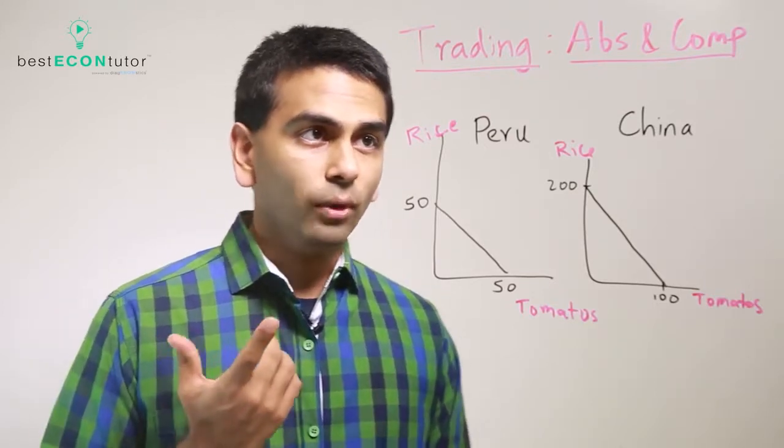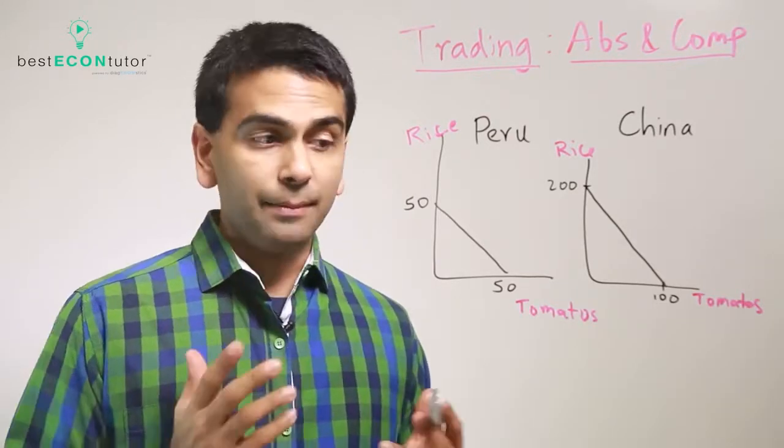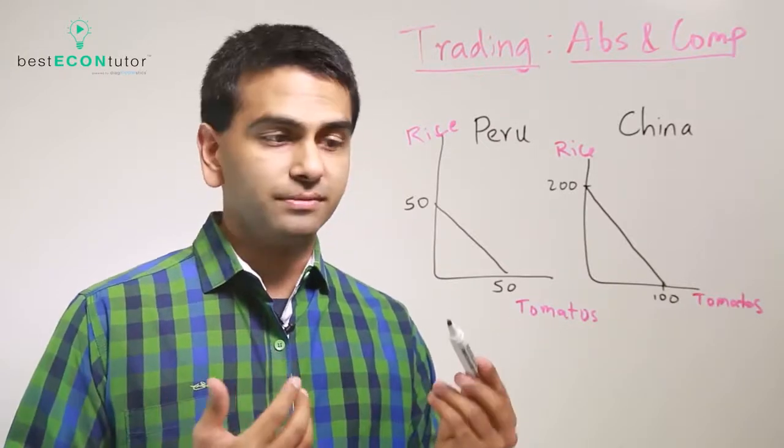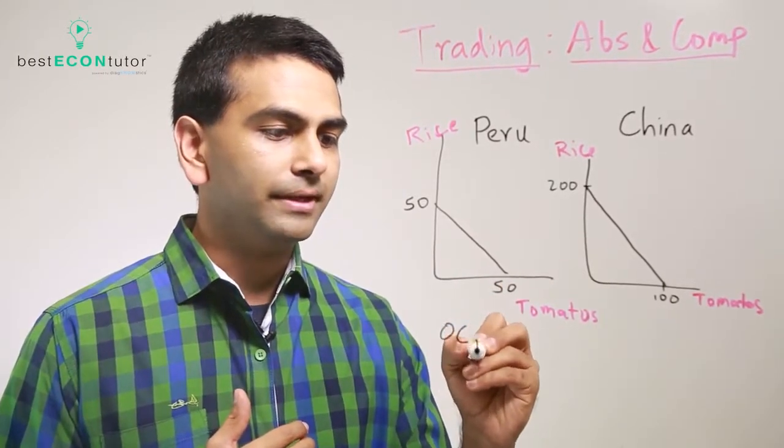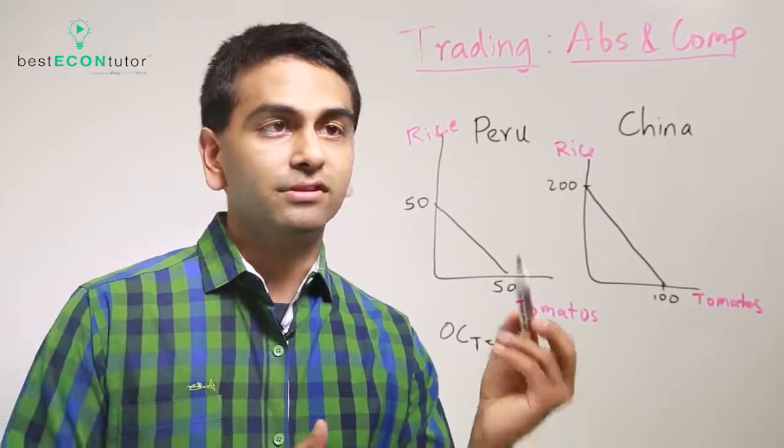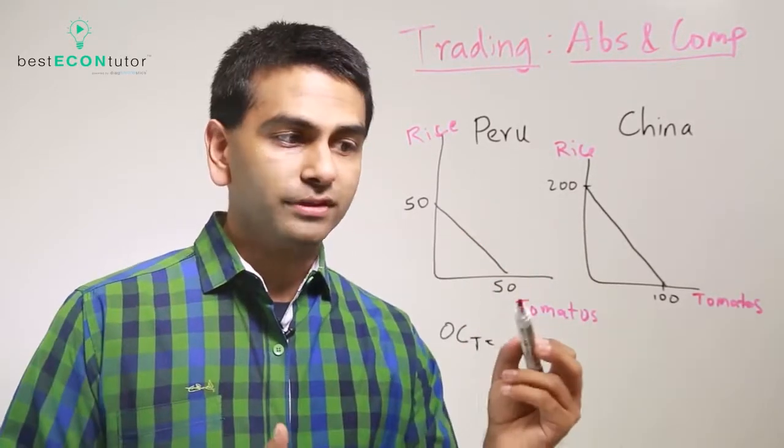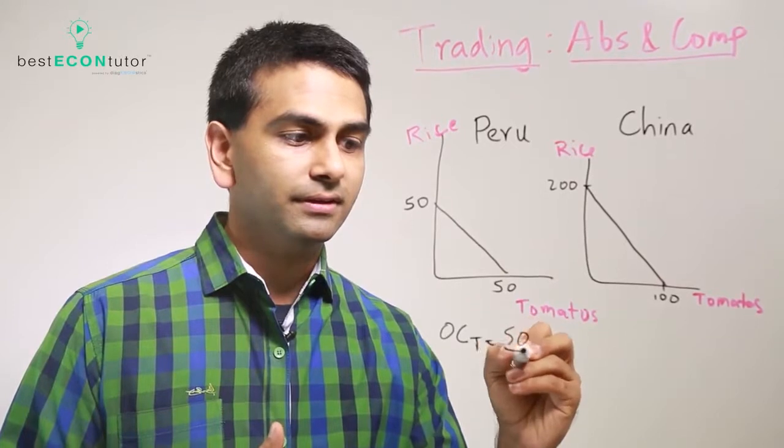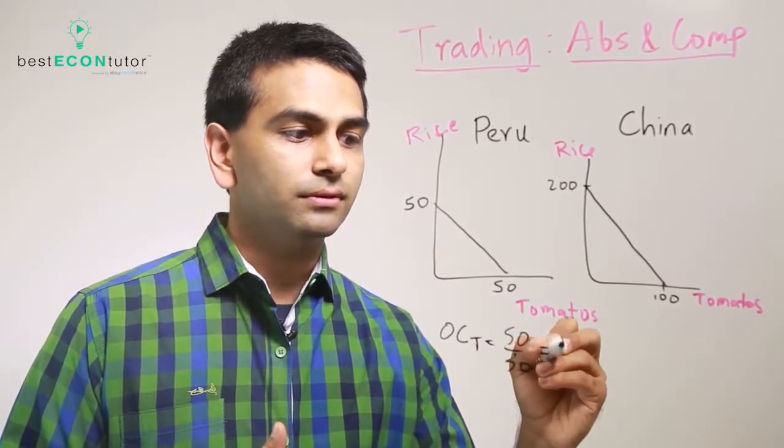So what is Peru's opportunity cost for tomatoes? Well, let's see, their opportunity cost for tomatoes is the amount of rice over tomatoes. So 50 over 50, so that's equal to 1.